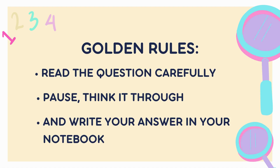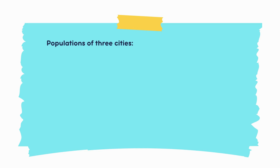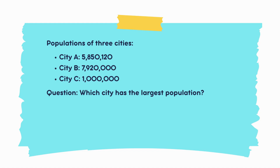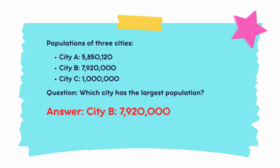Let's begin. The populations of three cities: City A — 5,850,120; City B — 7,920,000; City C — 1,000,000. Question: which city has the largest population? The answer is City B has the largest population.